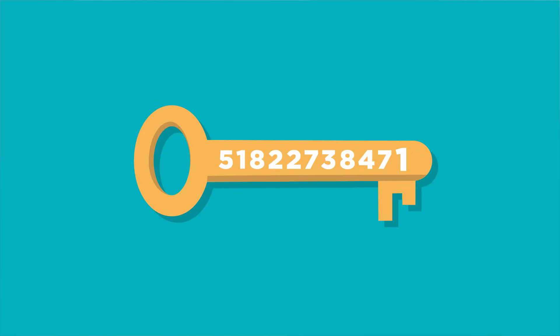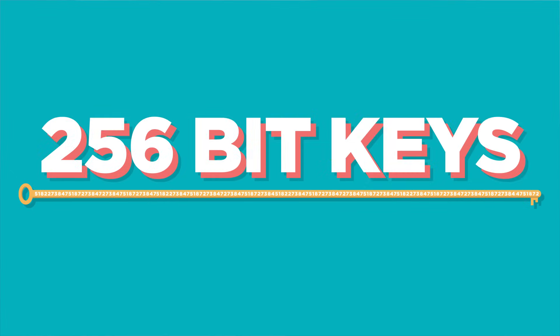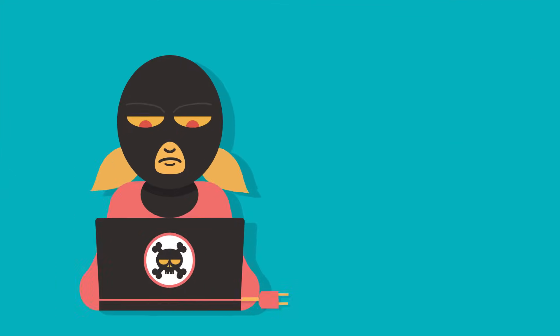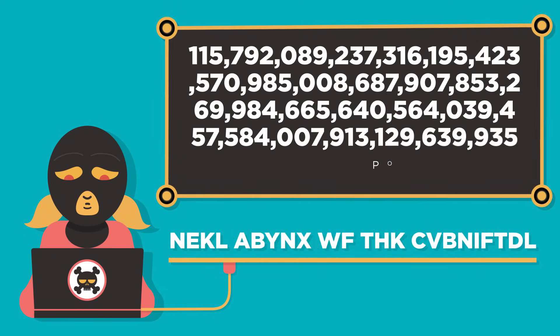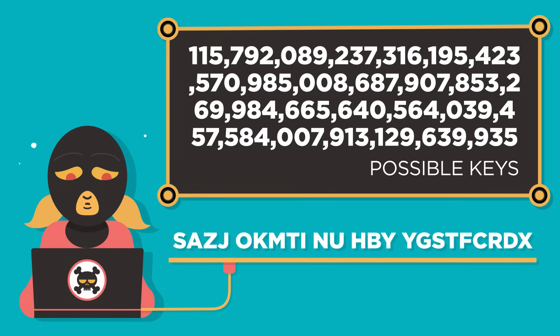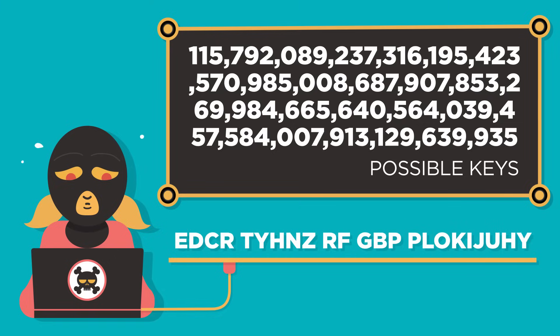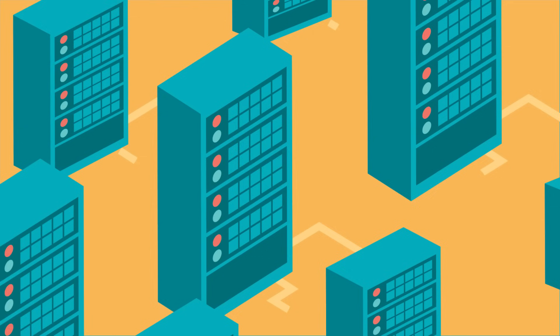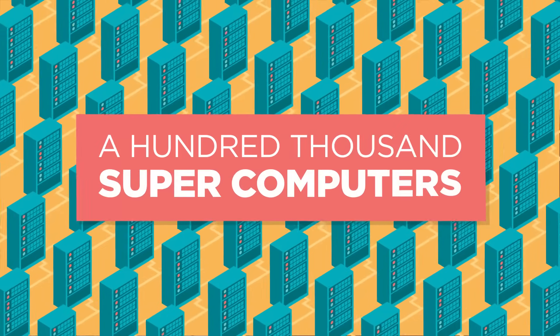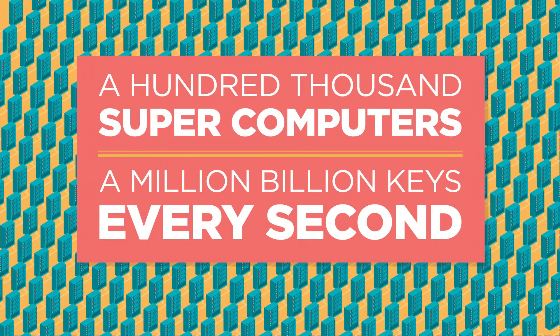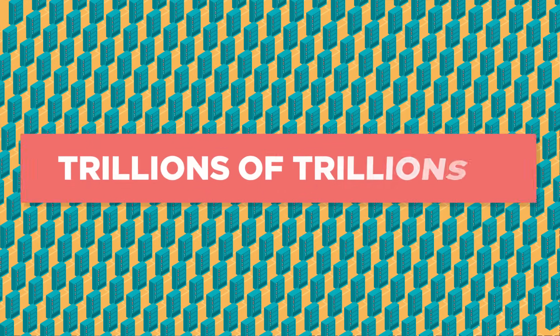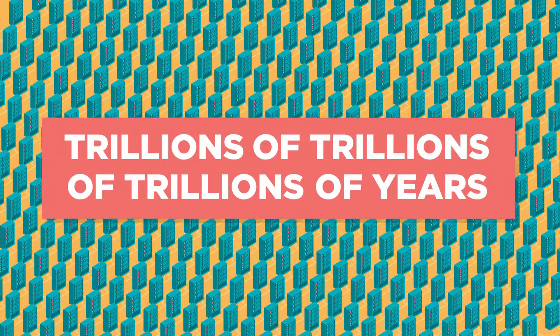Today's secure communications are encrypted using 256-bit keys. That means a bad guy's computer that intercepts your message would need to try this many possible options until they discover the key and crack the message. Even if you had 100,000 supercomputers and each of them was able to try a million billion keys every second, it would take trillions of trillions of trillions of years to try every option just to crack a single message protected with 256-bit encryption.